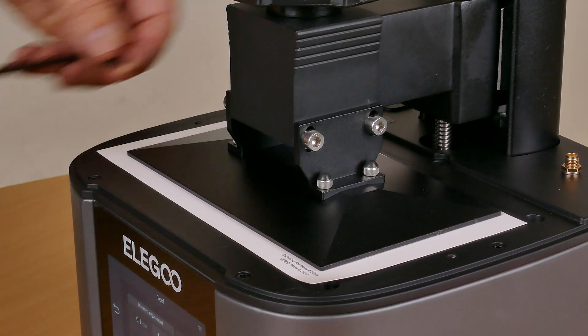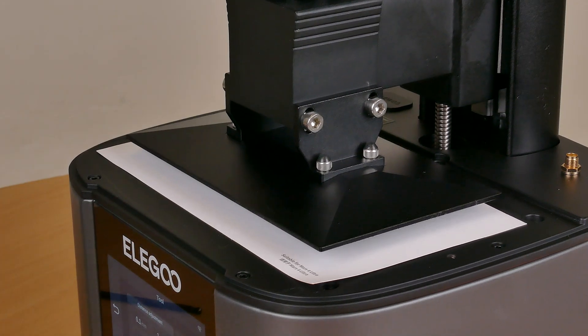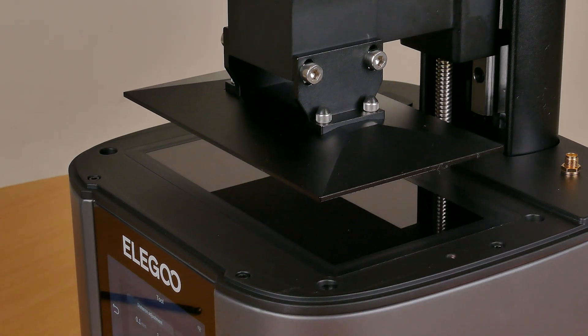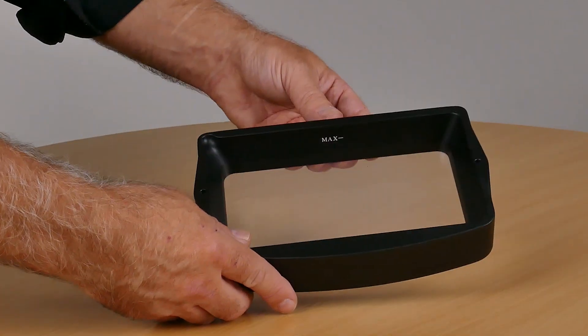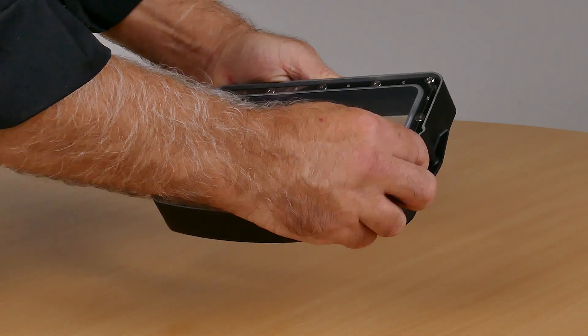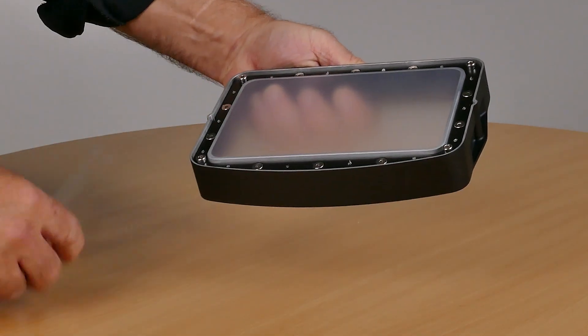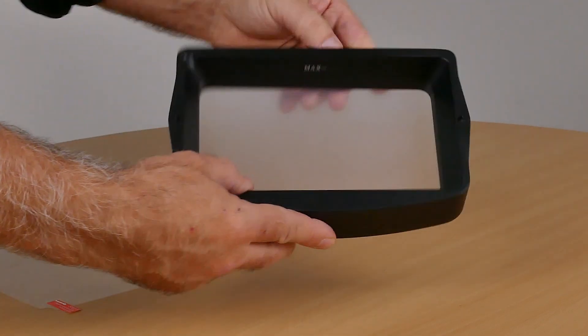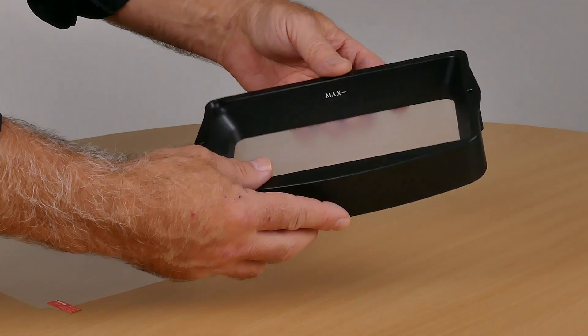Once you're happy with that, go back to the touchscreen and raise the build plate. This next step caught me by surprise - the vat uses a very different type of film. As you can see it's clear but as soon as I ripped off the protective film it goes cloudy. It's designed for high-speed printing.